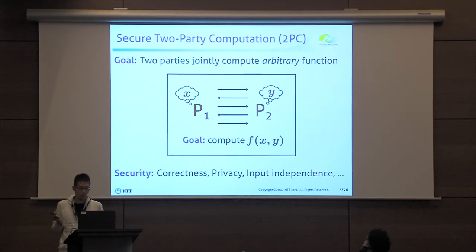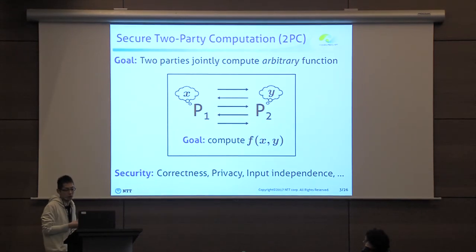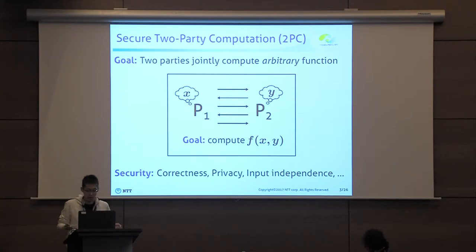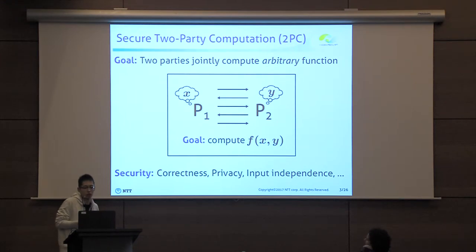For example, we require that they compute the function correctly, their input remains hidden, or they choose the input independently of the input of the other party.